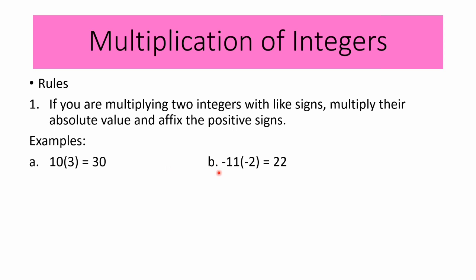For example letter B, we have negative 11 times negative 2. We are multiplying two integers with like signs, so the product is always positive: 11 times 2 is positive 22. Therefore, negative 11 times negative 2 is positive 22.